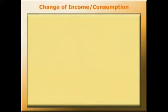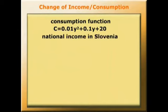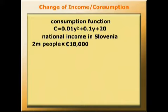Here we use differential calculus to work out the change in consumption that might result from a change in income in Slovenia. Let's look at the consumption function. It may well be non-linear. We'll base our calculations on a consumption function where C consumption is 0.01y squared plus 0.1y plus 20. All figures are in millions of euros. National income in Slovenia — there are about 2 million people there, and they have an average income of 18,000 euros per head annually — so that gives us a total national income of 36 billion euros.